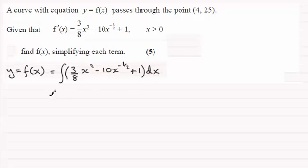And in the usual way, assuming that you're okay with integration, we just add 1 to the power and divide by the new power. So for this one we've got 3/8 times, and if we add 1 to the power of x squared you've got x cubed and you divide by the new power. So you've got 3/8 times x cubed over 3. For the next one, we've got minus 10, and if we add 1 to the power, we get x to the power 1/2,